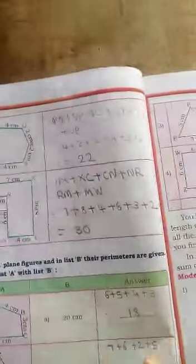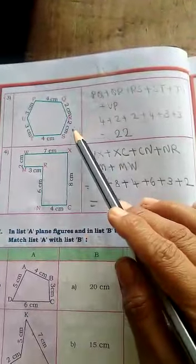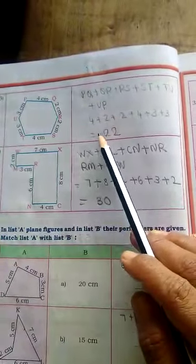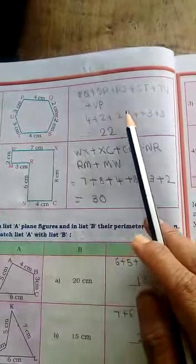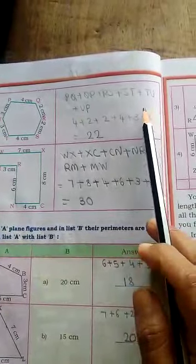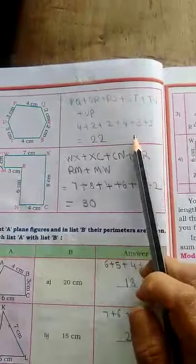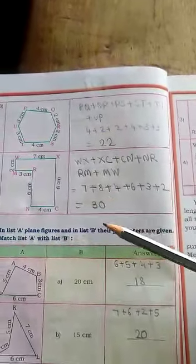Now the third one. P Q R S T U. P Q is equal to 4, Q R is equal to 2, R S is equal to 2, S T is equal to 4, T U is equal to 3, and U P is 3. So totally 22 cm.